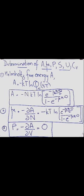From the partition function we determine the thermodynamic quantities: Helmholtz free energy A, chemical potential mu, pressure P, entropy S, internal energy U, and Cv. Helmholtz free energy A = minus NkT log[e raised to minus beta h-bar omega over 2, divided by (1 minus e raised to minus beta h-bar omega)]. Chemical potential mu is the derivative of A with respect to N. Since A has no dependence on V, pressure P = minus dA/dV = 0.